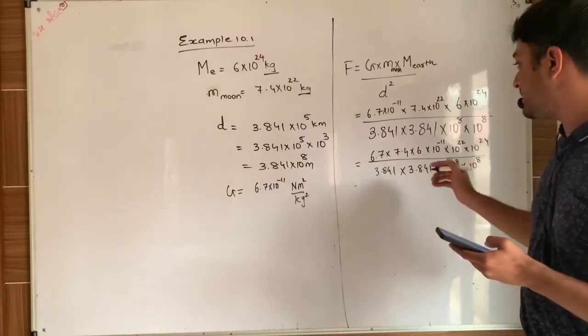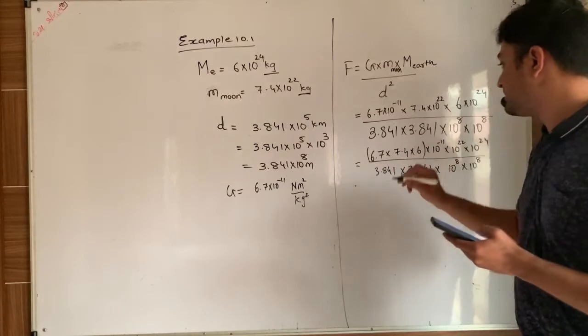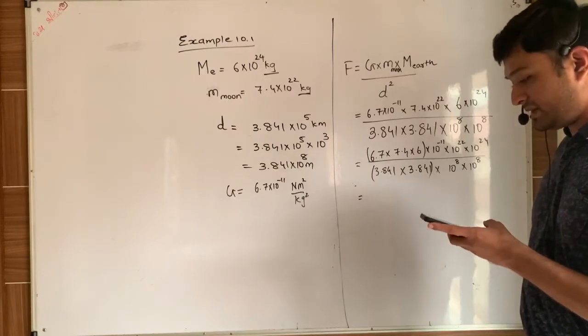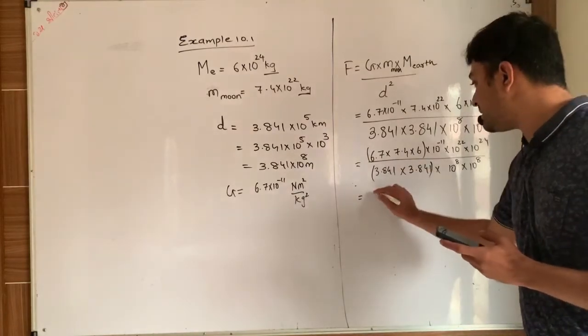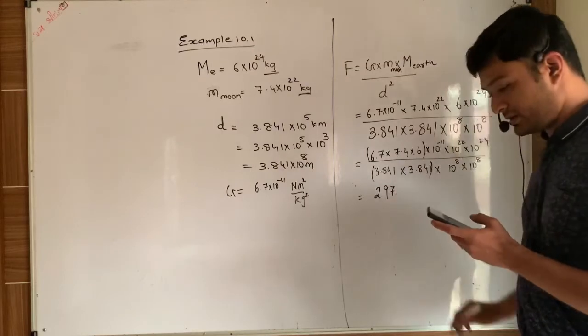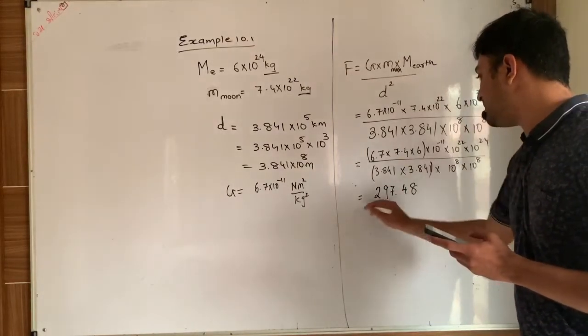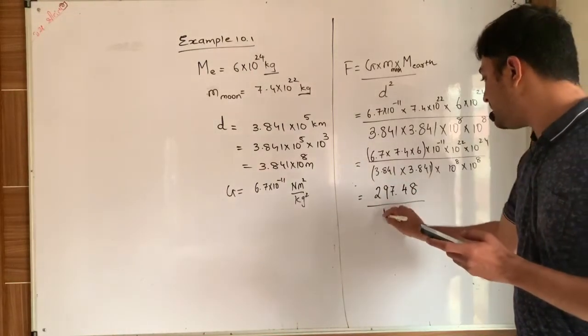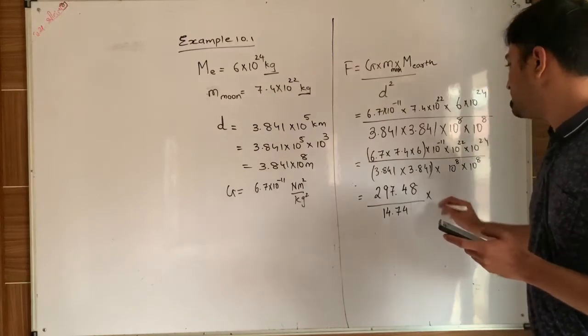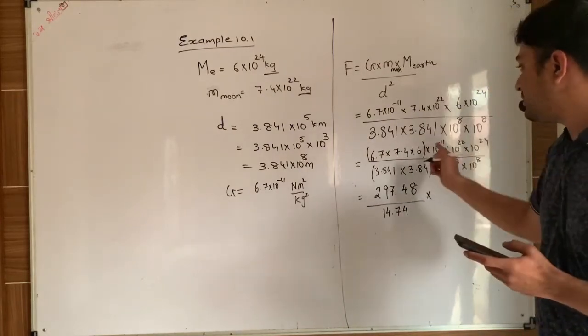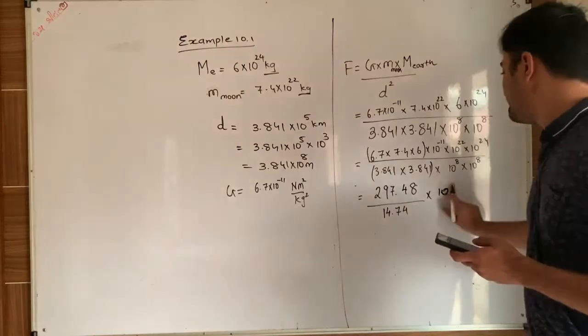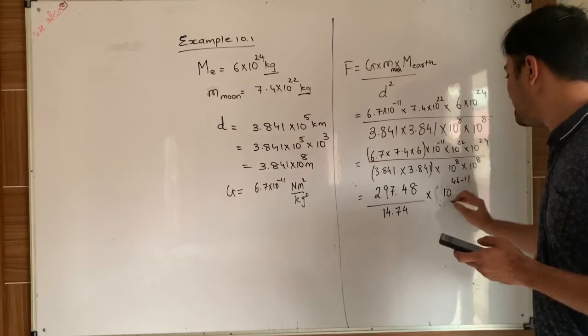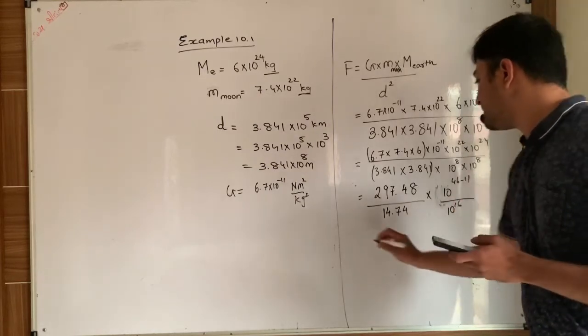Now what we can do, we can just multiply the numbers in numerator and denominator that I have mentioned in the bracket. And if you try to multiply the numbers, then in numerator we will get 297.48 and it will be divided by, if you make the square of 3.84, so 14.74 into, if you just add all the numbers that is in power, so 10 raise to 35 upon 10 raise to 16.